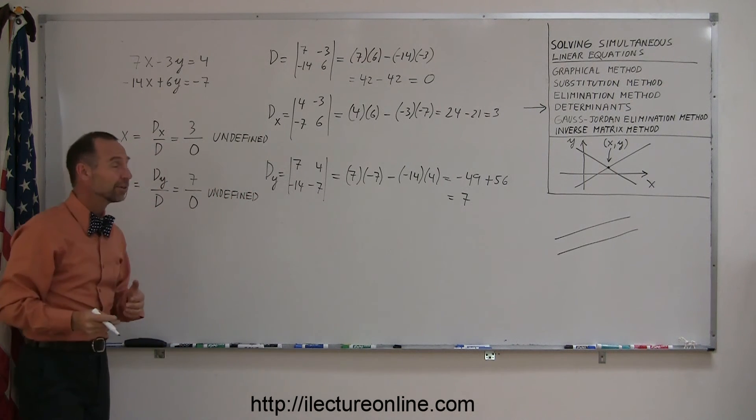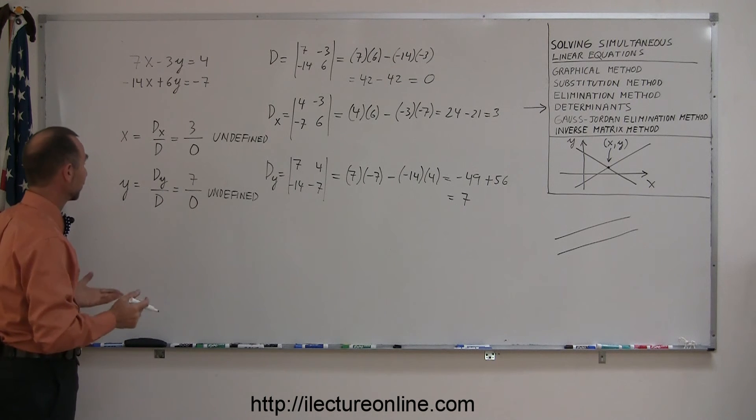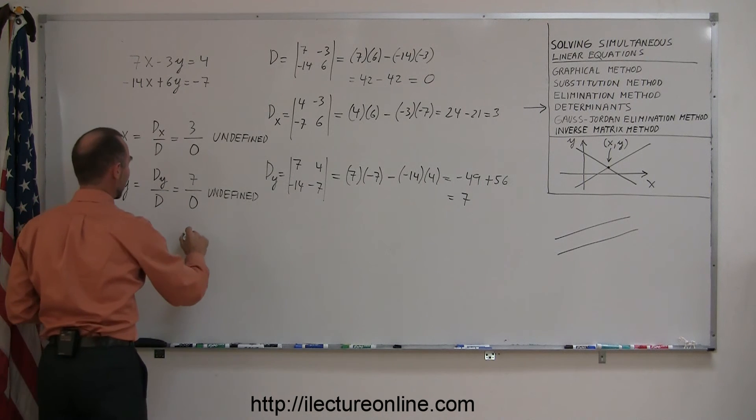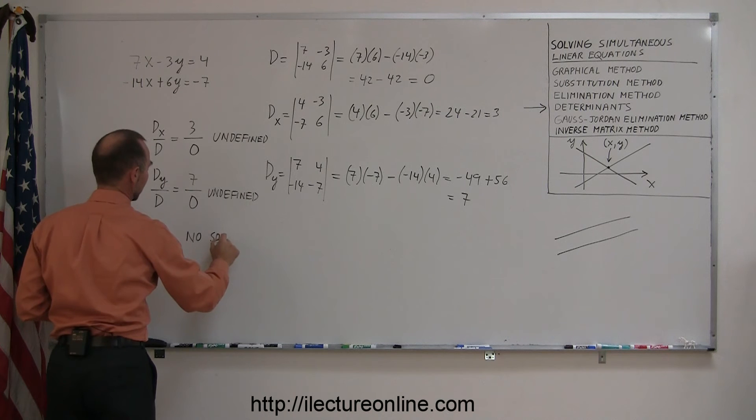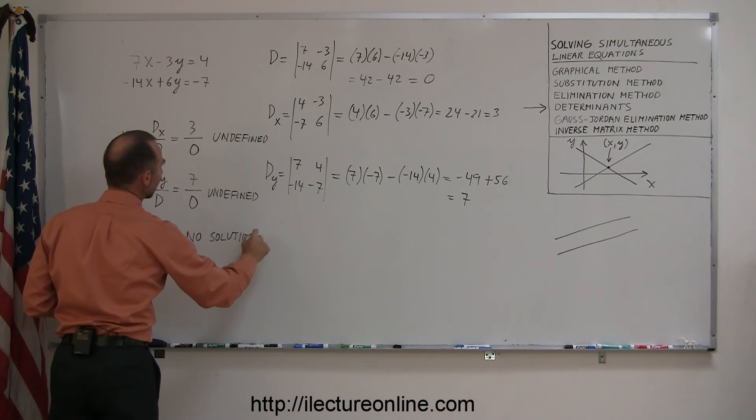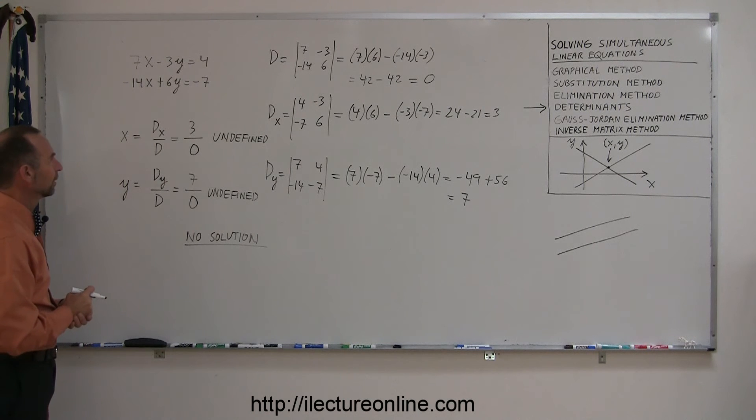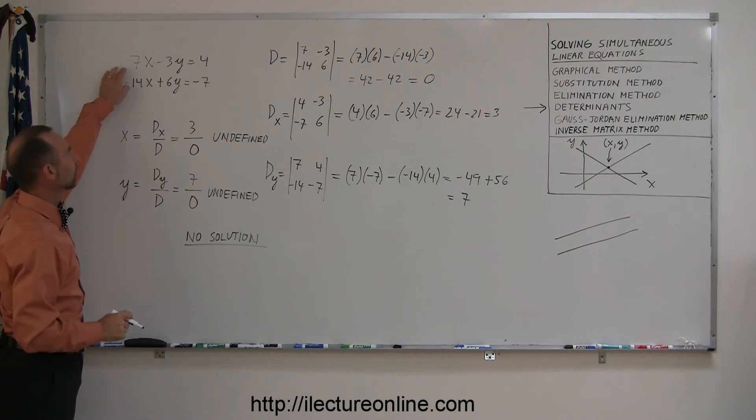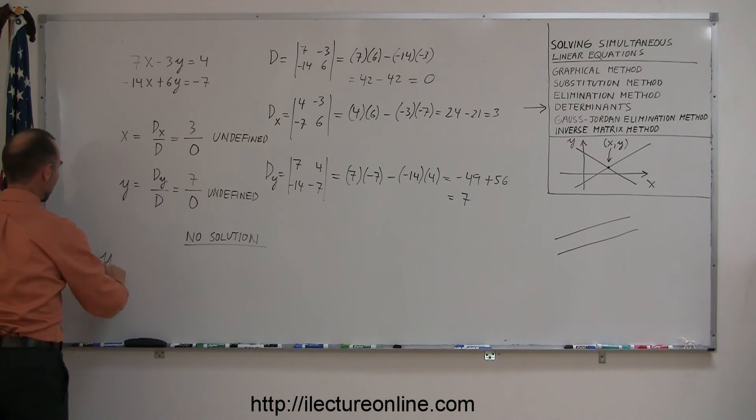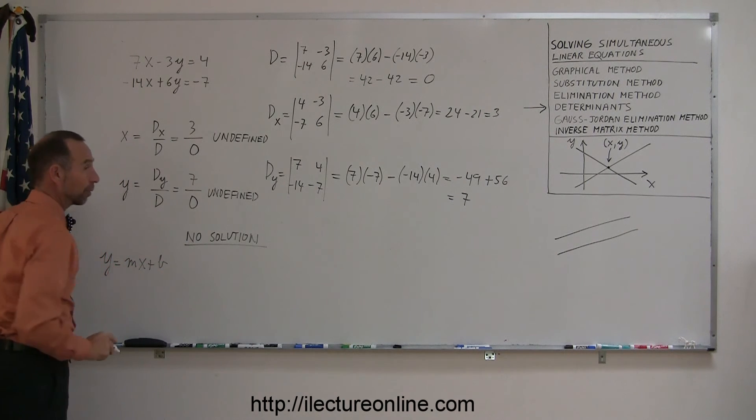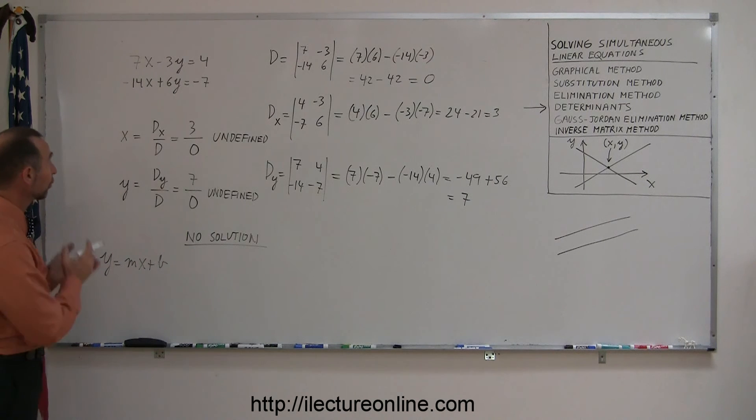This is undefined, and so, since there's neither a defined number for x or a defined number for y, we can say no solution, which probably means that the two lines are parallel. Now, just to make sure that is indeed the case, let's rewrite these equations in the form y equals mx plus b. That's slope-intercept form to see if they have the same slope.